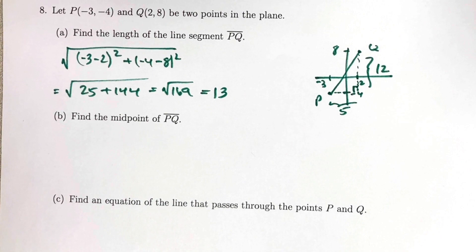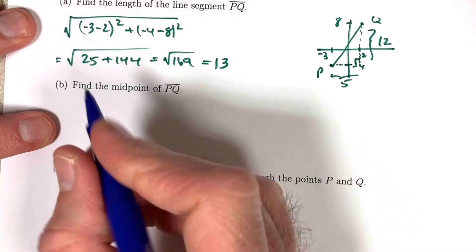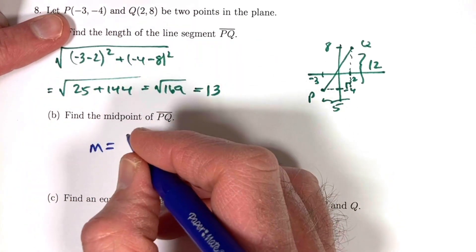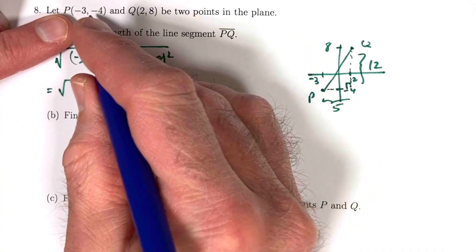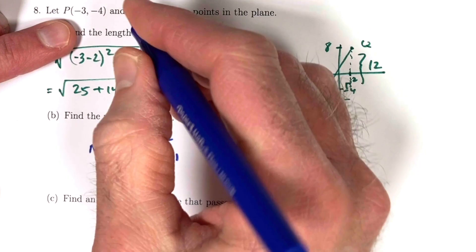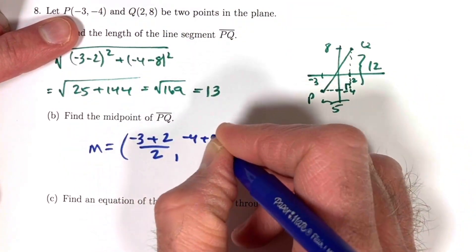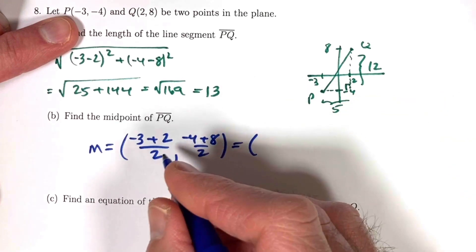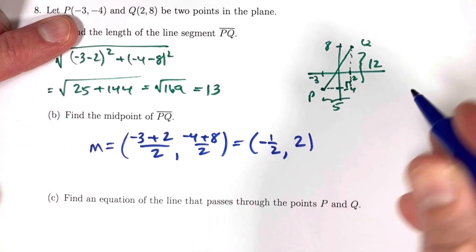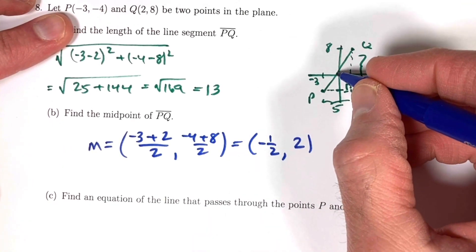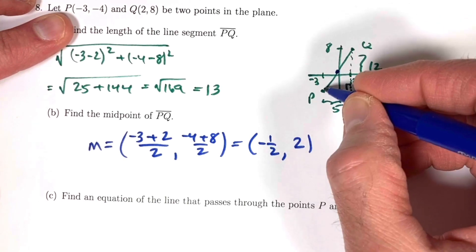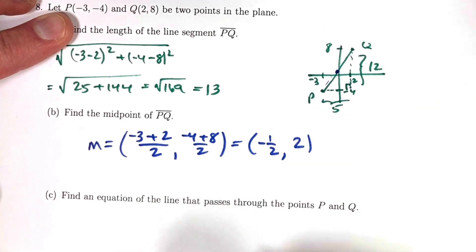Part B: find the midpoint of PQ. Average the x-coordinates: negative 3 plus 2 divided by 2 is negative 1 half. Average the y-coordinates: negative 4 plus 8 divided by 2 is 2. The midpoint is negative 1 half comma 2.